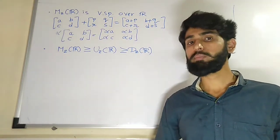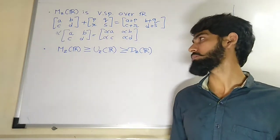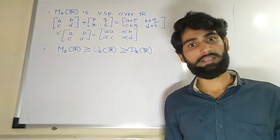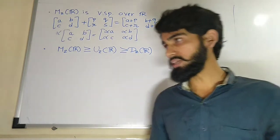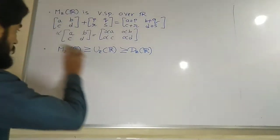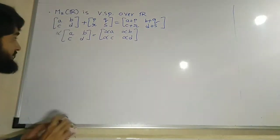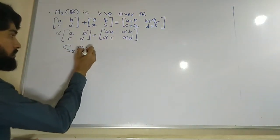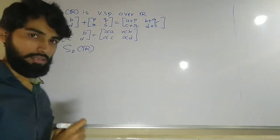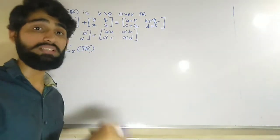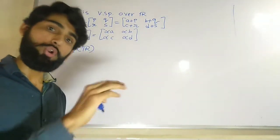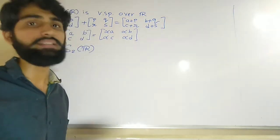In today's class we will be continuing the same example by considering new subspaces. Let us see one of the examples, that is S2R. So S2R is nothing but set of all symmetric matrices which are 2 by 2 and the entries are real numbers.